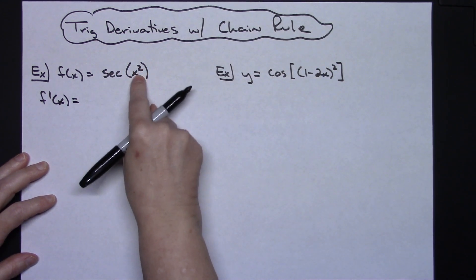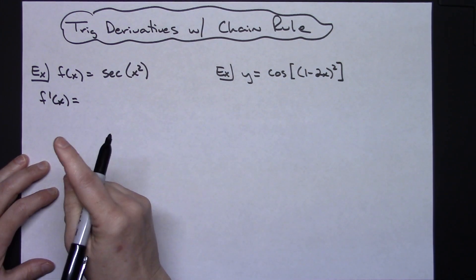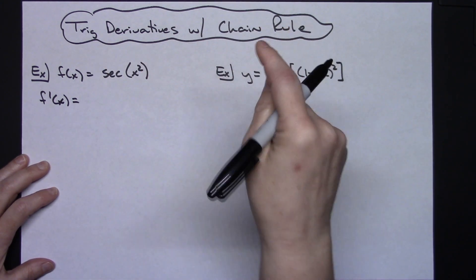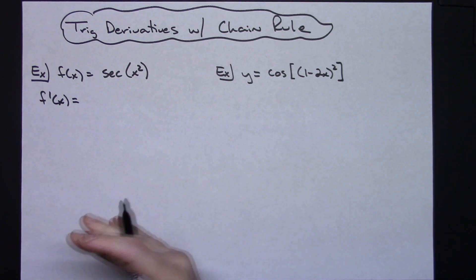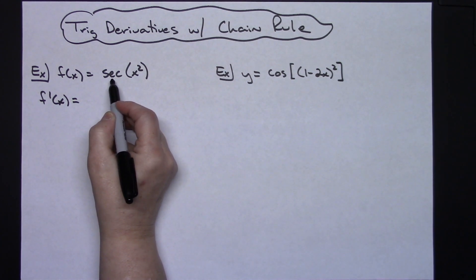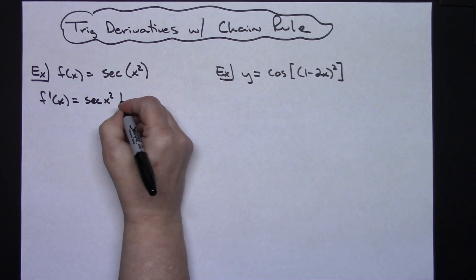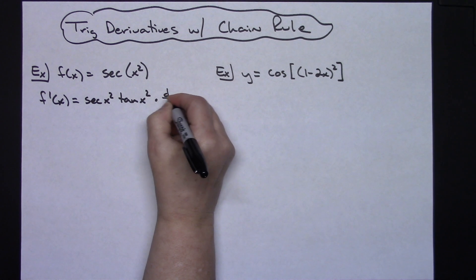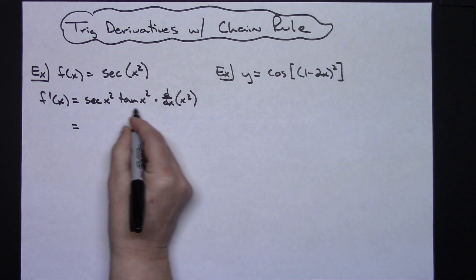This clearly has an inside part of x squared and an outside part of secant, so that means I am going to have chain rule here. When I do chain rule, I take the derivative of the outside function, leave the inside function alone, and then multiply times the derivative of the inside function. I'll use some d/dx notation in the middle of the problem to show where chain rule occurs. The derivative of secant is secant tangent, and I leave the inside alone, so I'm going to have secant x squared times tangent x squared, then times the derivative of that inside function — d/dx of x squared.